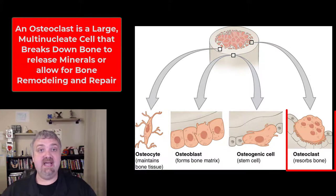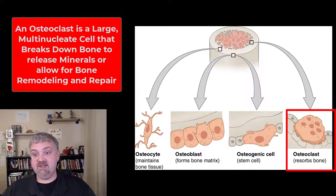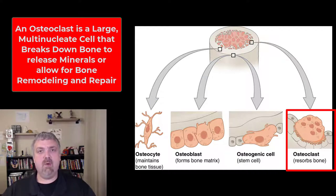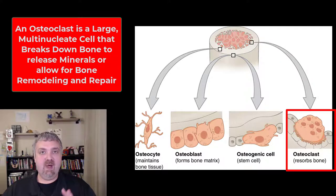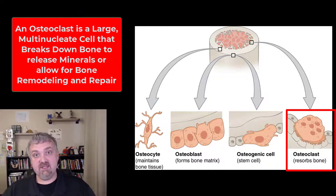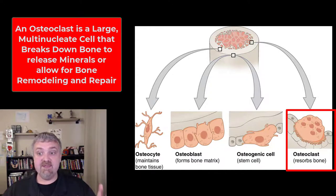The other type of cell is the osteoclast. These are giant, multinucleate cells, and their job is to resorb or break down bone. You might wonder why you'd ever want that to happen — if we need calcium in our blood, our body has to go get it from our bones. So osteoclasts will take calcium from our bones and put it back into our blood — same with other minerals.